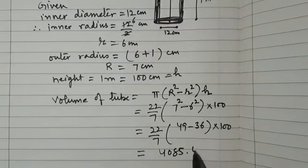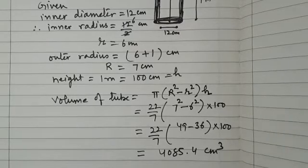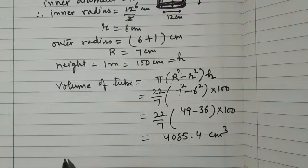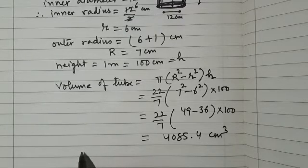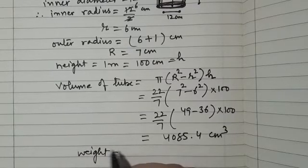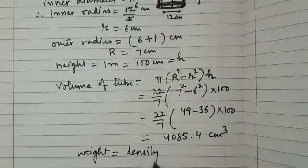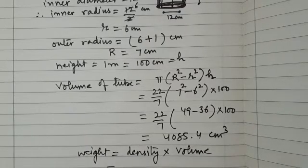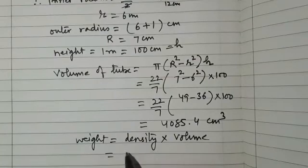So now we need to find the weight. We are going to use the formula: weight, or we know that mass is density multiplied by volume. So substitute the value of density, that is 7.8 grams per cubic centimeter.